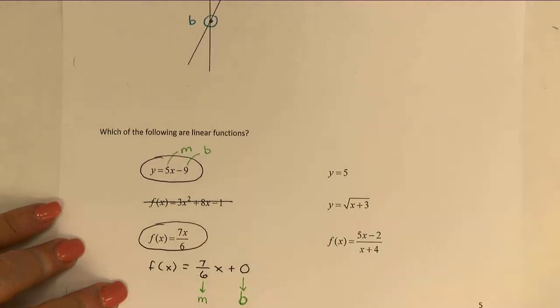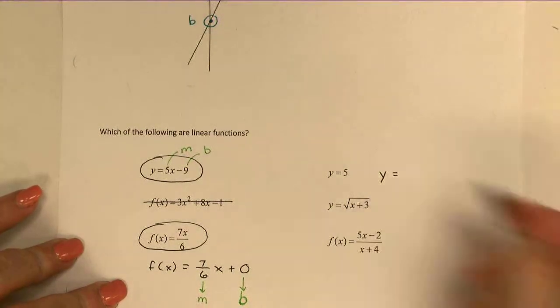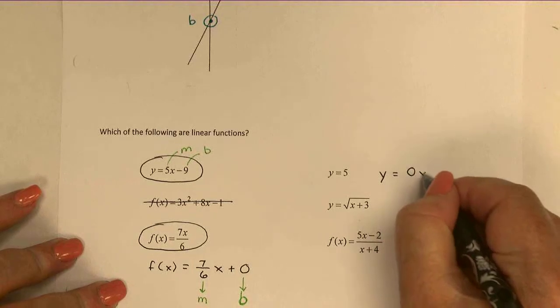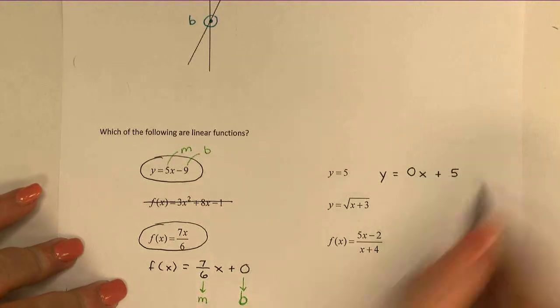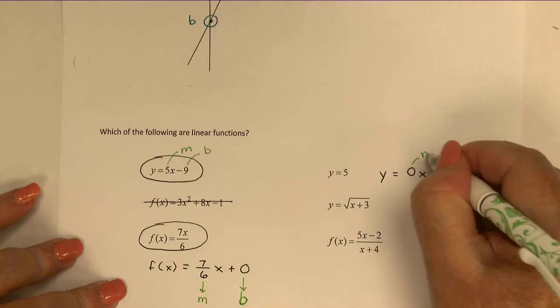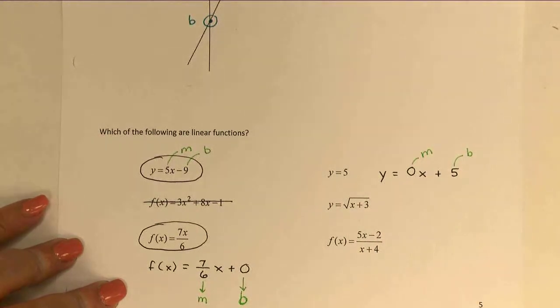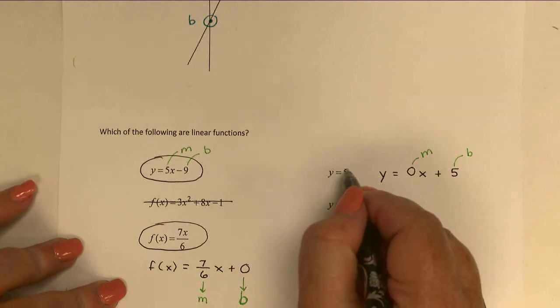What about the one over here in the second column? Once again, this one might be a linear function that might be slightly hidden, kind of similar to the last one. The problem is that one of the values is 0. There are no x's, so I could write this as 0x + 5, at which point it becomes quite obvious that I do have an m, a slope of 0, and a b for y-intercept of 5, and therefore it does fit the format for a linear function.